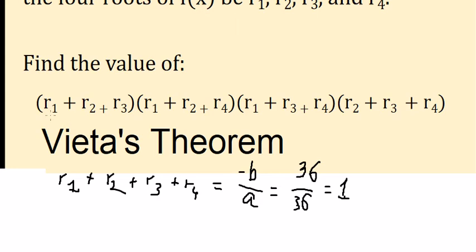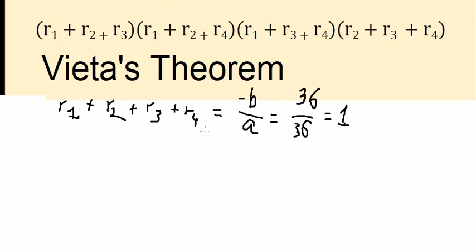Next, we see that they just have r₁, r₂, r₃, but they don't have r₄ here. To get this, we just move r₄ to the right. So you got r₁ + r₂ + r₃ = 1 - r₄.